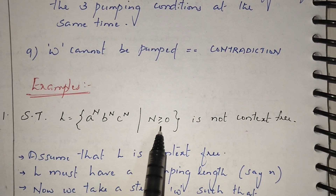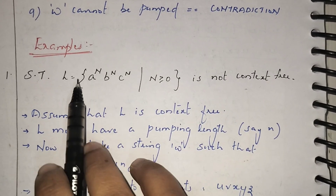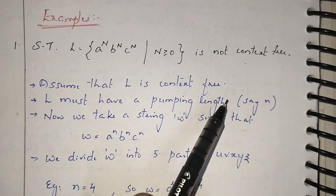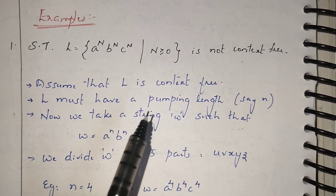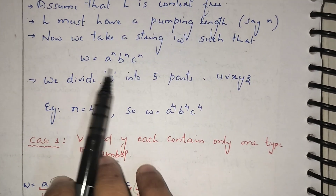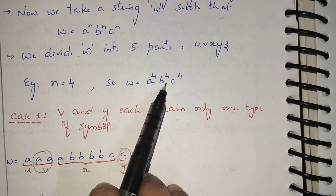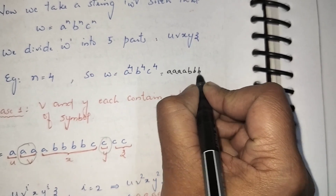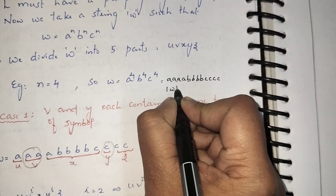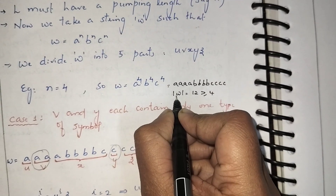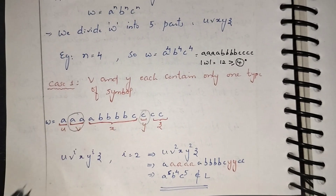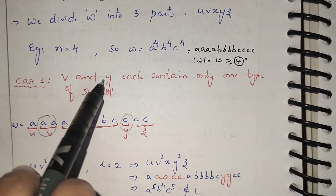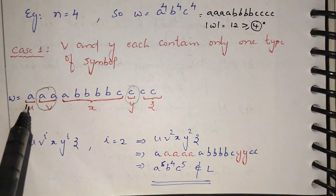We are proving that the language a^n b^n c^n for n ≥ 0 is not context-free — it is a context-sensitive language. We assume it is context-free, take pumping length n = 4, and select the string 4a 4b 4c, i.e., a a a a b b b b c c c c. The length of this string is 12, which is greater than or equal to 4, so |w| ≥ n. We pump v and y only, where each contains only one type of symbol.